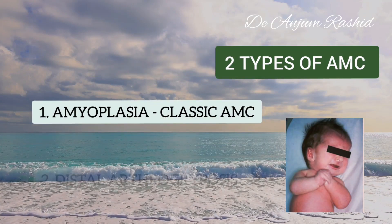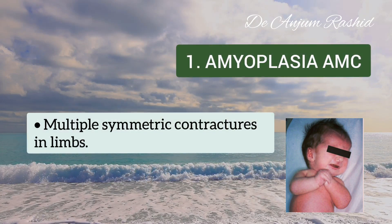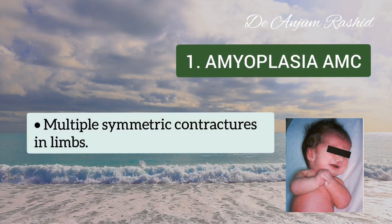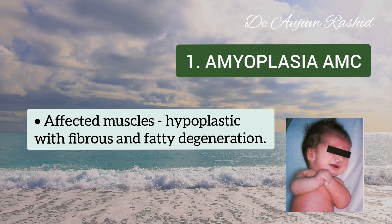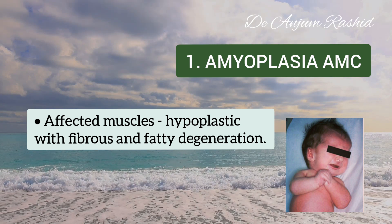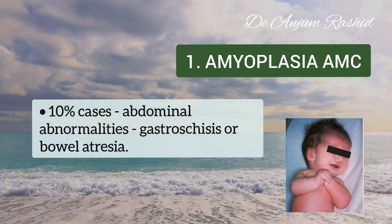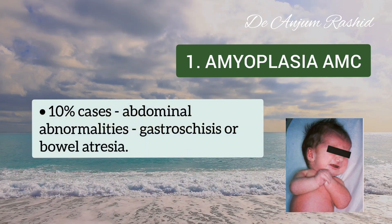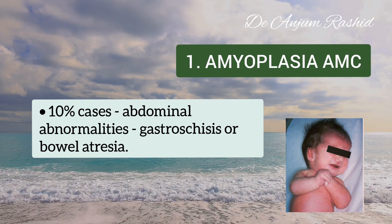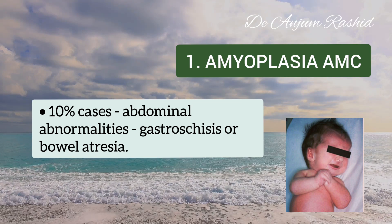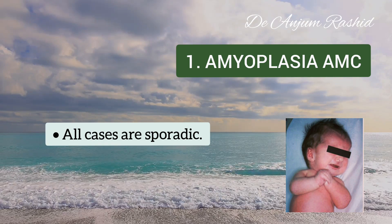There are two major types of arthrogryposis multiplex congenita. The first is amyoplasia, or the classic type. In this, multiple symmetric contractures occur in the limbs. Affected muscles are hypoplastic and have fibrous and fatty degeneration, and intelligence is usually normal. About 10% of patients have some abdominal abnormalities due to lack of muscle formation, most commonly gastroschisis or bowel atresia. Nearly all cases are sporadic.